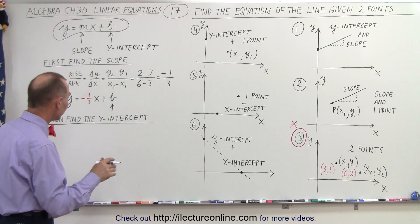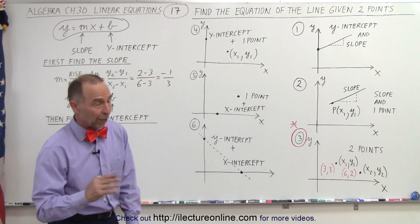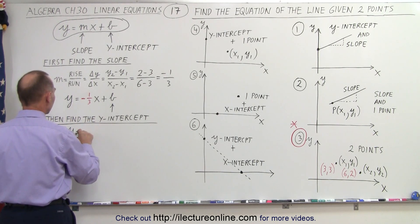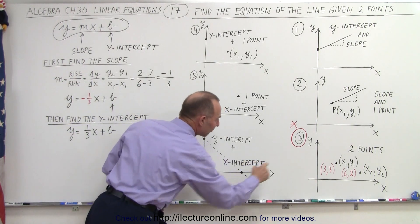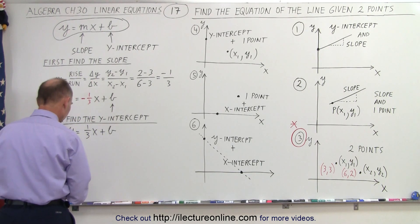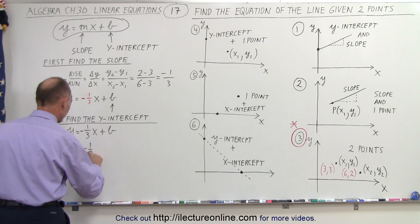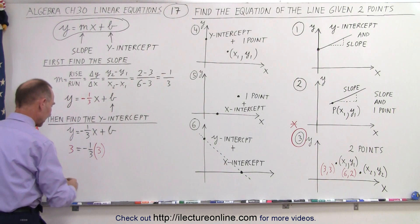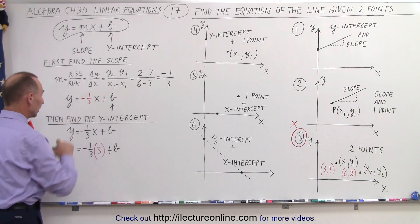Now we find the intercept. We use one of the two points — let's use the point with the smallest numbers, 3 and 3, but again it doesn't matter which point we use. So now we're going to plug that in for y and x. We end up with y equals minus 1 third x plus b, and instead of y and x, we plug in the x and y value of one of the two points. So we end up with 3 equals minus 1 third times the value for x, which is 3, plus b.